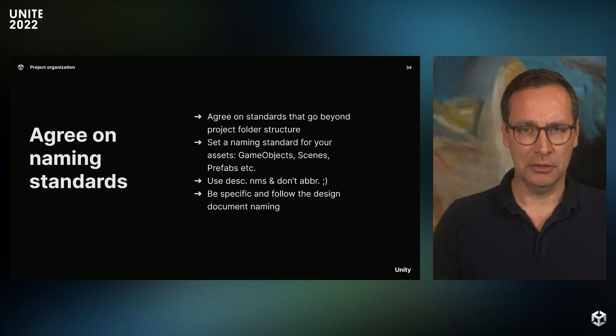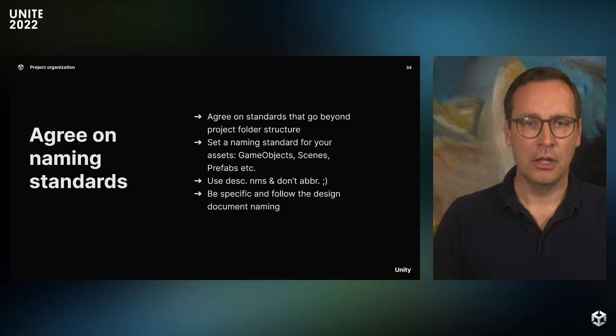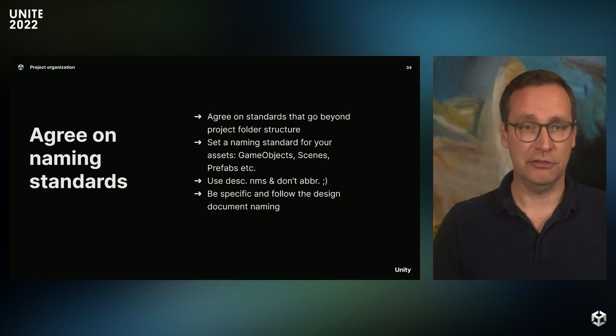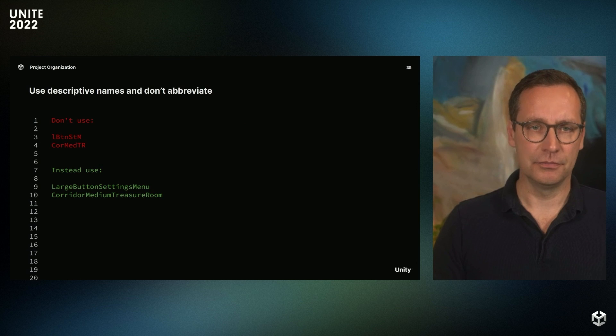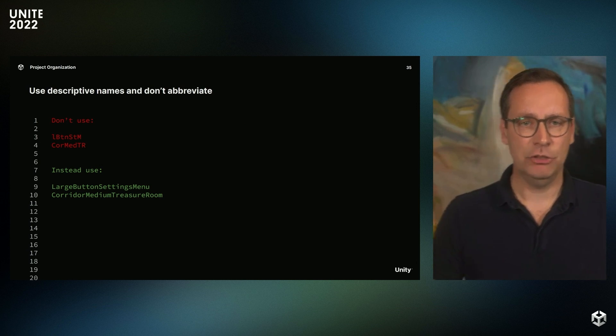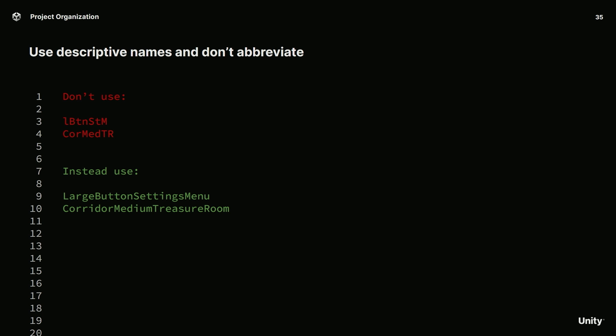It's a good idea to agree on standards that go beyond just project folders and structure. You might want to agree on naming standards for your game objects, scenes, prefabs, and so on. Just like with commits, it's best to use descriptive names — it's better to be specific than to leave out important details. It's tempting to use short names to save a few seconds here and there, but what might be logical for you today may not be so straightforward a year from now, or more importantly to another person on the team. A good name is one which everyone intuitively understands and which won't need renaming later on. Taking too many shortcuts on naming can be a really bad long-term investment.